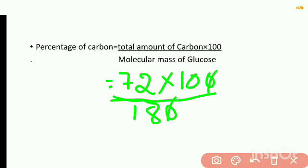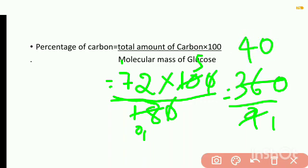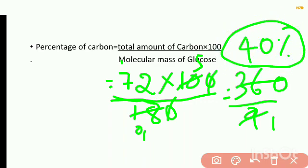Simplifying: the zeros cancel, giving 72 × 10 divided by 180, which simplifies to 720 divided by 18, giving 40. Therefore, 40% of carbon will be present in glucose.